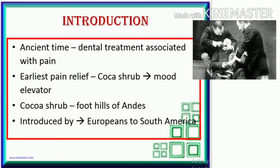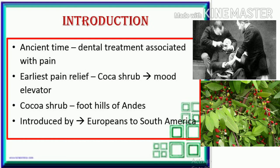Introduction. In ancient times, dental treatment was associated with pain. The earliest pain relief used the cocoa shrub as a mood elevator. The cocoa shrub is found in the foothills of the Andes, and it was introduced by Europeans to South America.